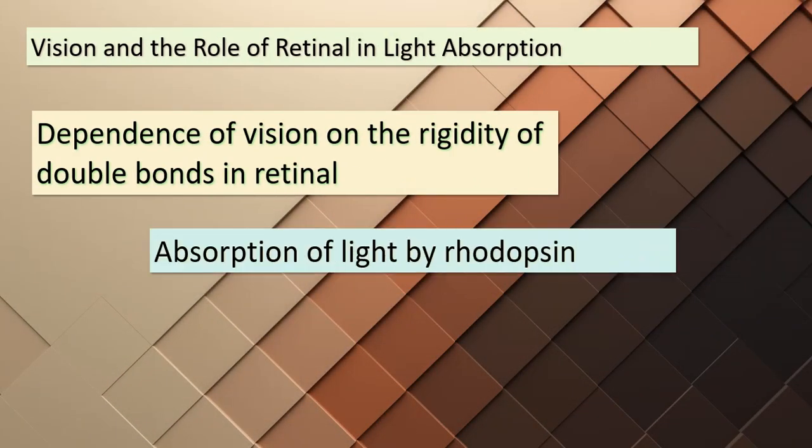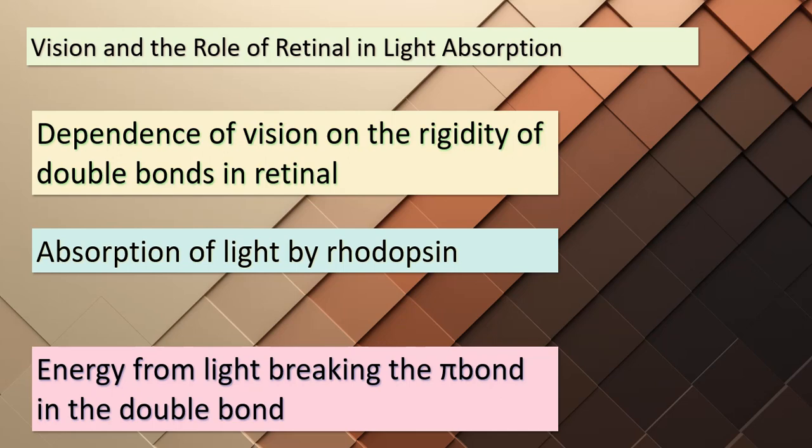Our journey starts by exploring the role of retinal in our ability to see. The rigidity of double bonds in retinal plays a crucial role here. In its normal state, retinal is held rigid by these double bonds. When light enters the eye, it's absorbed by a molecule called rhodopsin. The energy from the light breaks a specific portion of the double bond known as the pi bond.